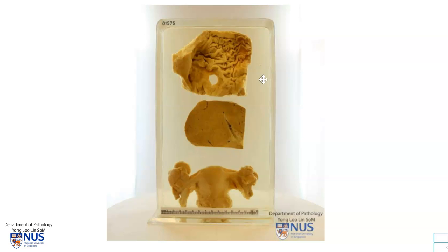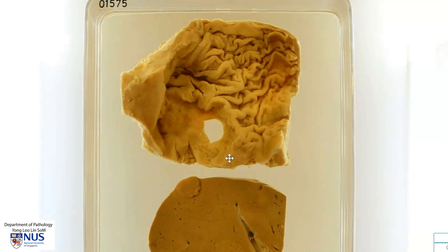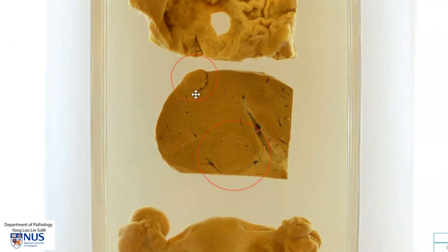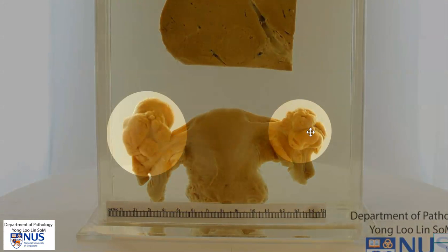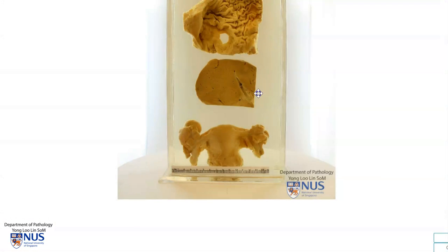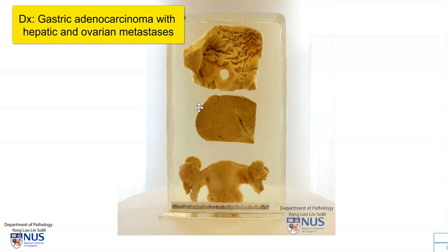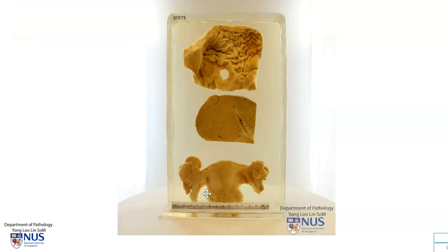Finally, just to summarize — this was the specimen we saw initially. We have a primary adenocarcinoma in the stomach with a very irregular ulcer with heaped-up edges, liver metastases with two nodules of metastatic tumour in the liver, and bilateral enlarged ovaries. This is an instance of gastric adenocarcinoma with both hepatic metastases as well as metastases to bilateral ovaries. Thank you.